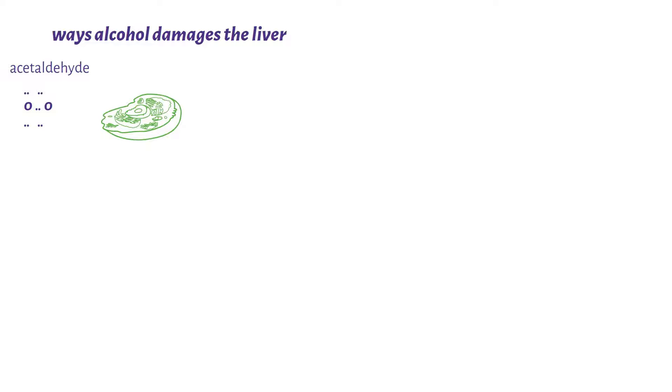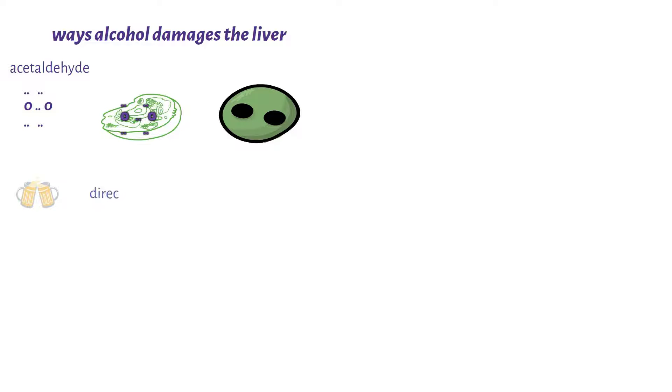One of the ways in which alcohol damages the liver is through the production of acetaldehyde. Acetaldehyde is highly toxic even at small levels, as it increases the concentration of free radicals. These free radicals contain oxygen that directly interacts with the cell, causing cell damage.